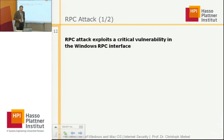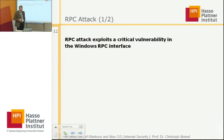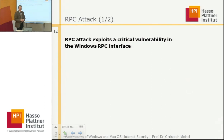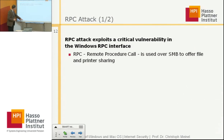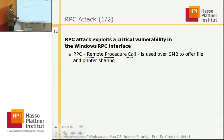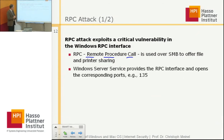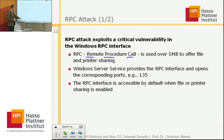A second attack in the context of the SMB protocol is RPC — Remote Procedure Call — attacks. There is an exploit of a very critical vulnerability in the Windows RPC interface. RPC is used over SMB and offers possibilities for file sharing and printer sharing. Windows Server Services provides the RPC interface and opens the corresponding ports, for example port 135.